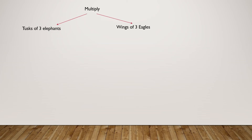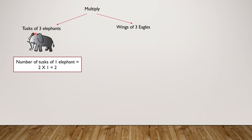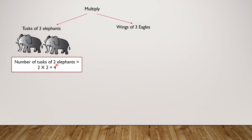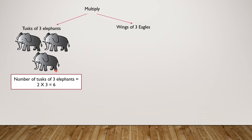Let's review this. We have to multiply the tusks of three elephants by the wings of three eagles. Can you tell me how many tusks are there on an elephant? Right! There are two tusks on one elephant. So the number of tusks on two elephants will be two times two, which is four. And the tusks of three elephants are two times three, which is six. So the number of tusks on three elephants is six.